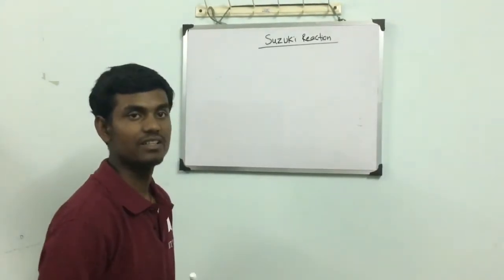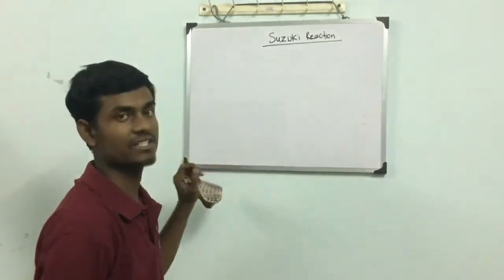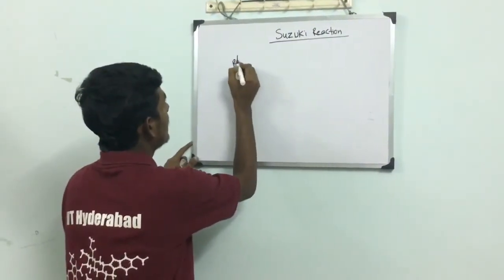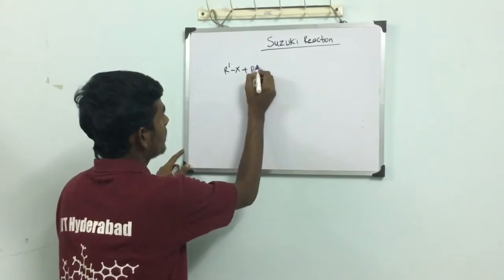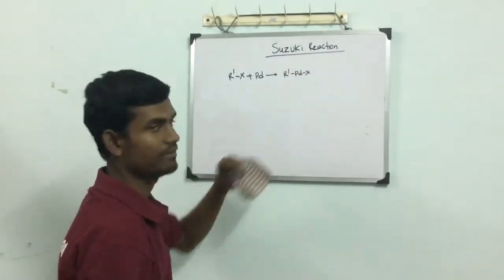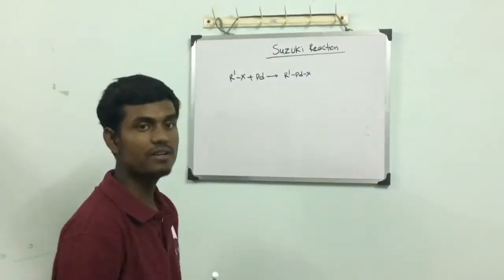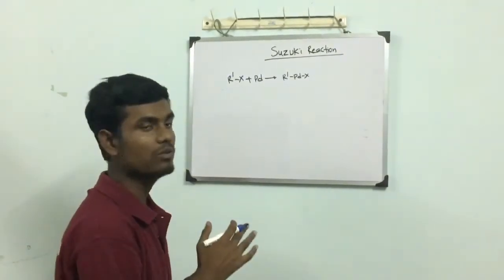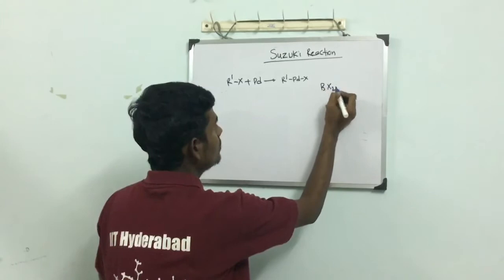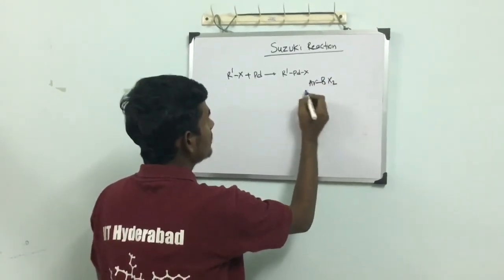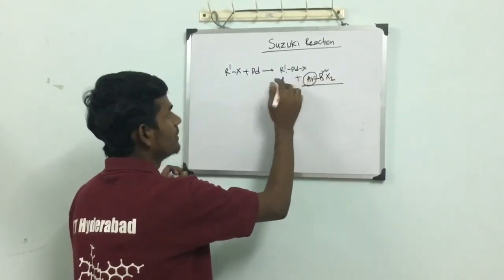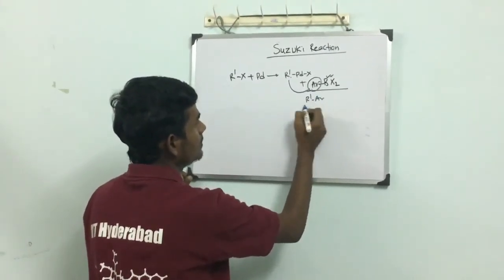What happens in this reaction? This organometallic reaction is a cross-coupling reaction. Here in presence of palladium, an alkyl halide R1X undergoes oxidative addition to give R1PdX. The Suzuki reaction is a boron-mediated reaction and the boron compound transfers the second alkyl group. So boron X2 plus Ar is the source of the other organic part and this couples R1 and Ar.